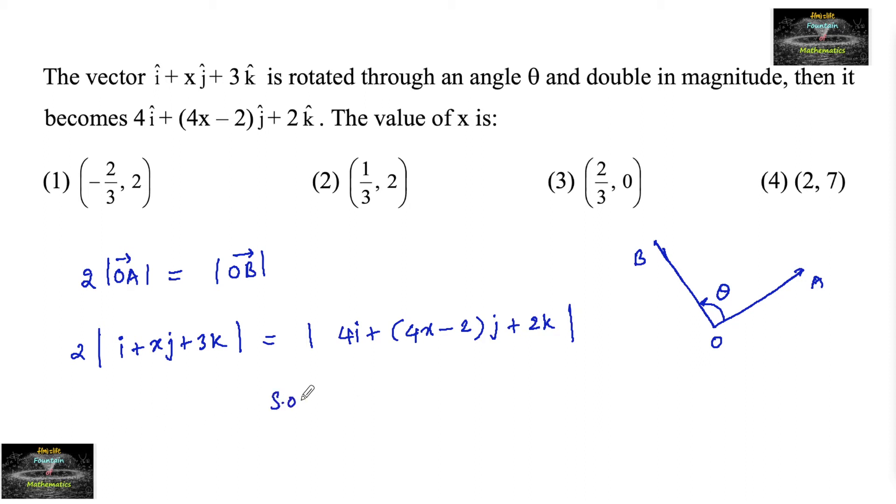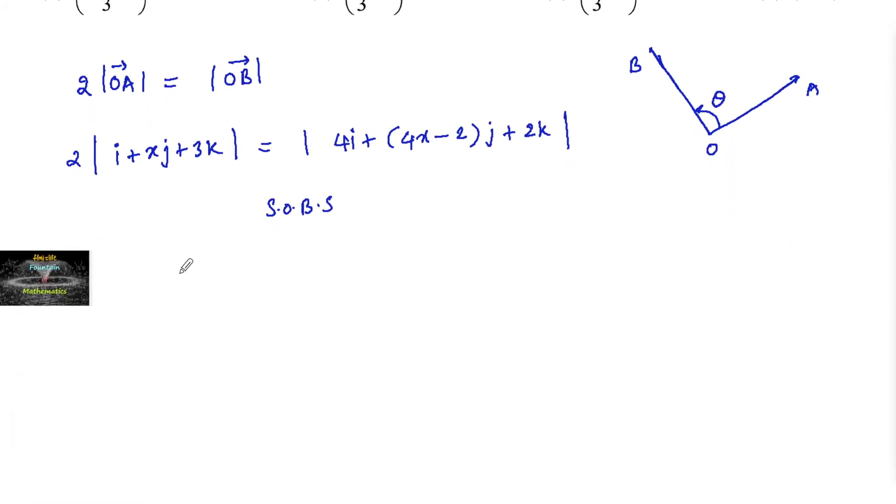So squaring on both sides, 4 times 1 plus x squared plus 3 squared is equal to 16 plus 4x minus 2 whole squared plus 2 squared is 4. We can take out 4 common, so 4 times 4 plus 2x minus 1 whole squared.